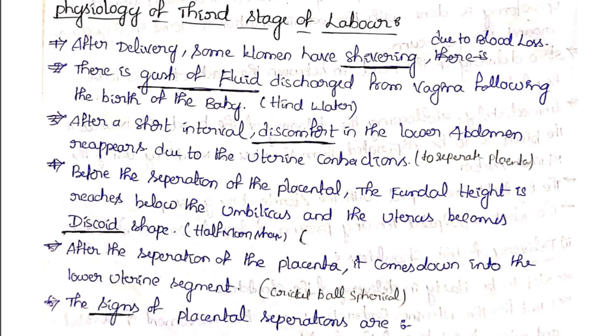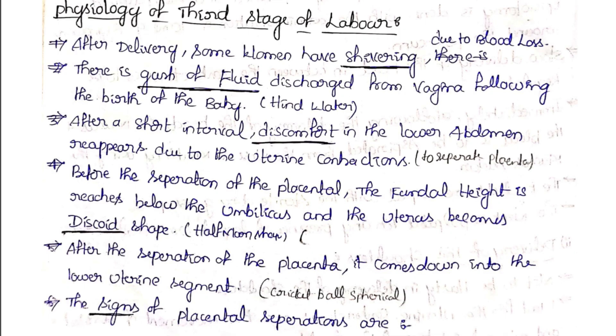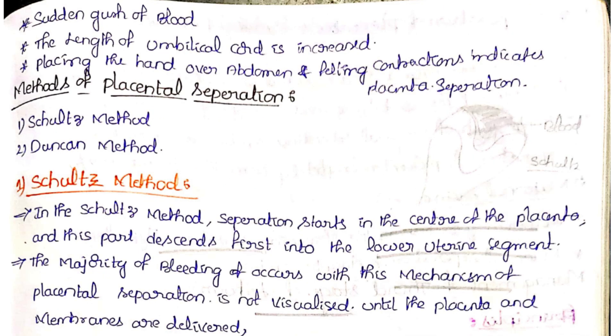In the third stage, the placenta is separated. Before separation, the fundal height drops below the umbilicus and the uterus becomes discoid in shape. After separation, the placenta descends into the lower uterine segment. The signs of placental separation include a sudden gush of blood.